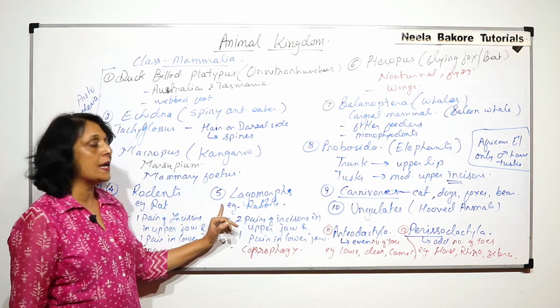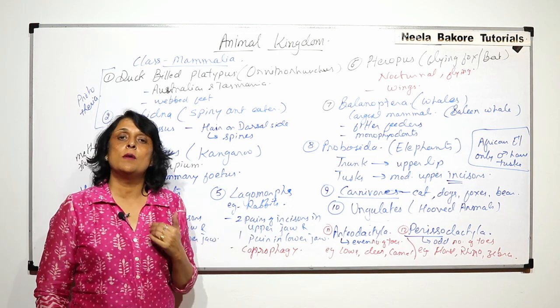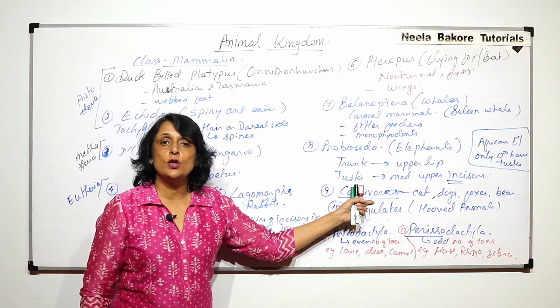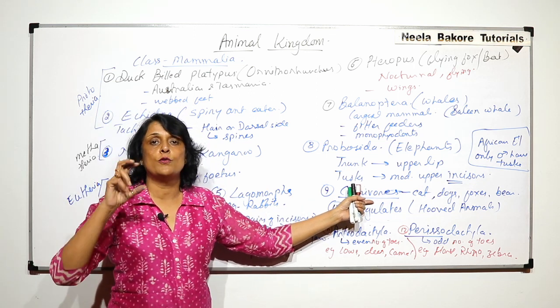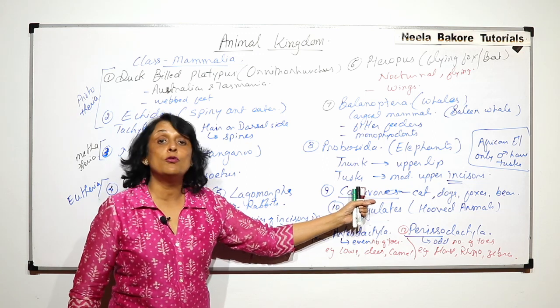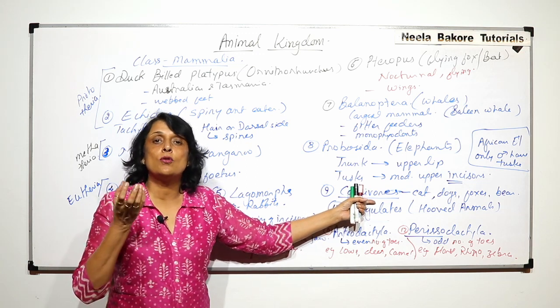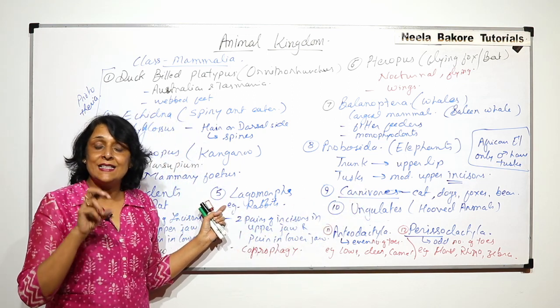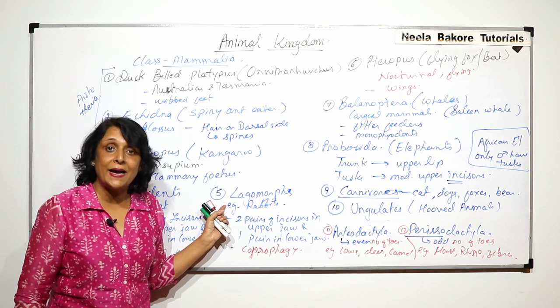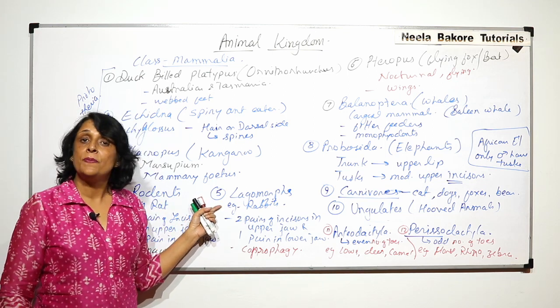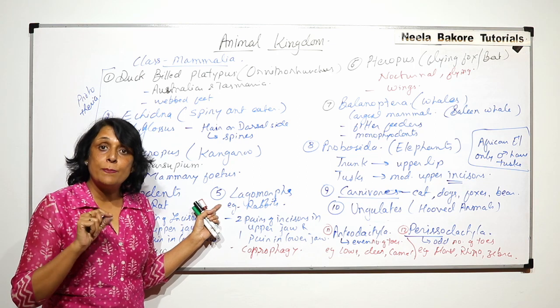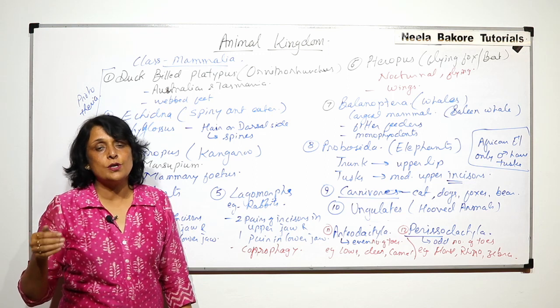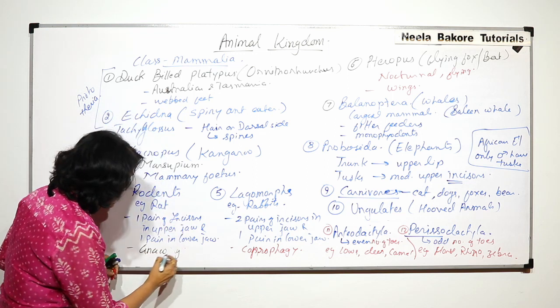Now when we talk of rodents and lagomorphs, we also come across a term which is called diastema. As we talked of carnivores, we said they have long, big, powerful, strong canines because they have to tear open the skin and eat the raw flesh. These rodents and lagomorphs, they have incisors, and incisors are for biting. They do not eat meat, so the canines are absent. So there is a space between incisors and premolars. That space is known as diastema.